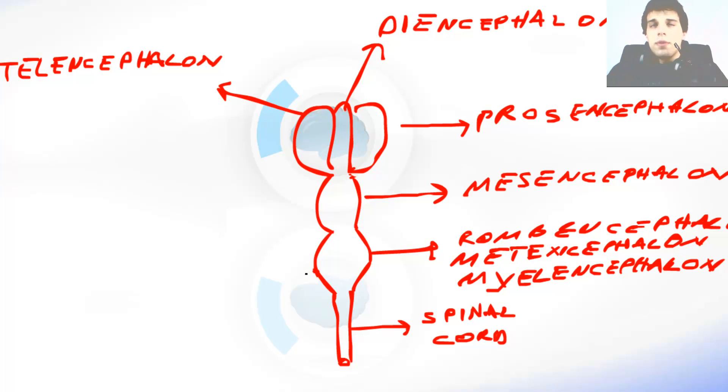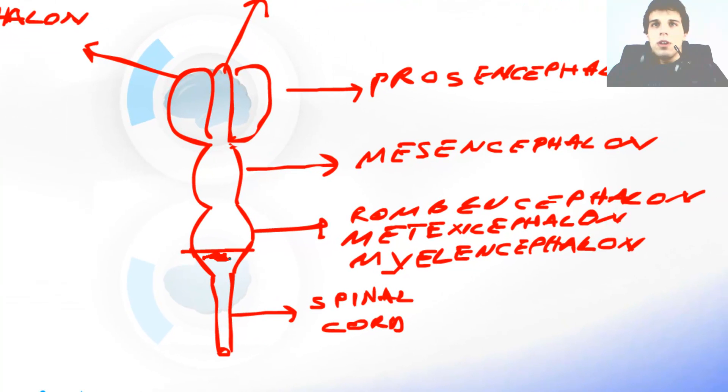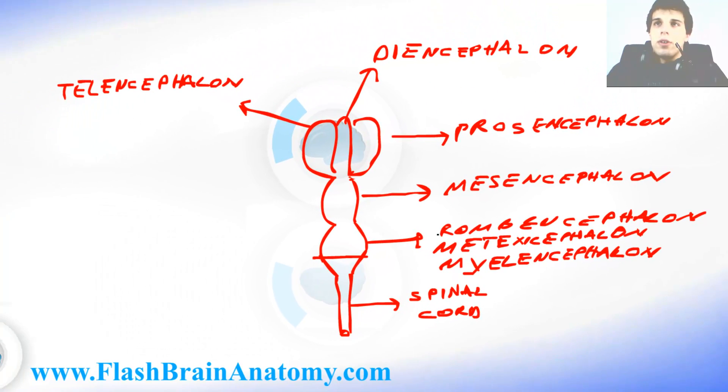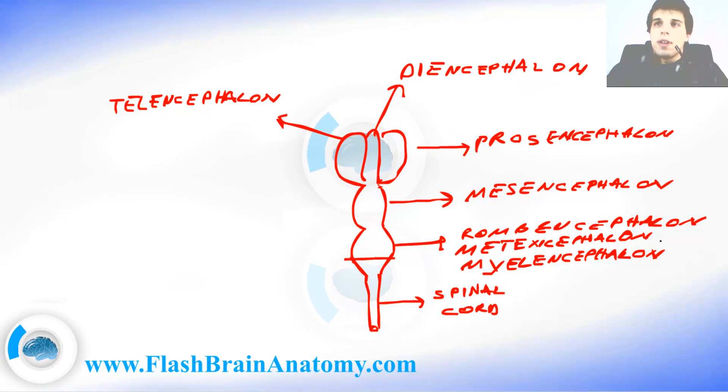But first, before I do that, just to say that from this part over here the myelencephalon is created, and from this part over here the metencephalon is created. And as I said, metencephalon and myelencephalon together form the romancephalon.